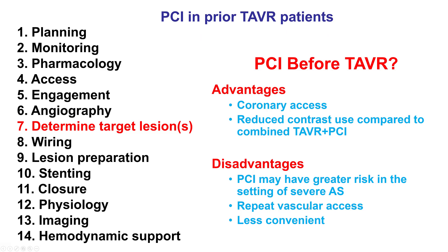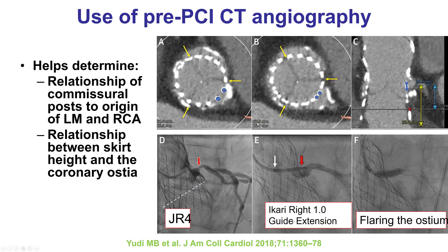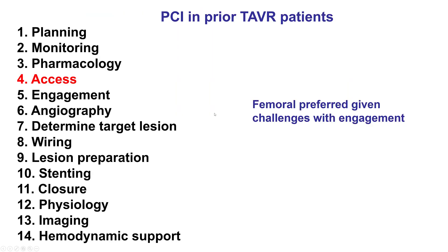Also, there is a need for repeat vascular access to subsequently perform TAVR, which makes it less convenient for the patient. If a patient has had TAVR, having pre-procedural CT can help determine the location of the coronary ostia in relationship with the commissural posts of the aortic valve prosthesis, as well as the scar height. Given potential challenges for engaging the coronary artery, femoral access is generally preferred.